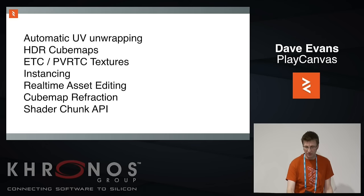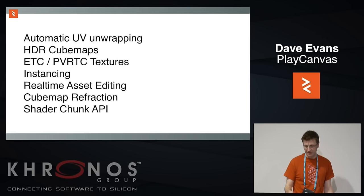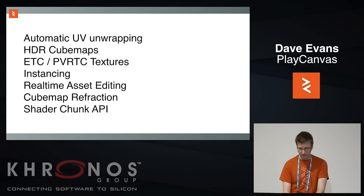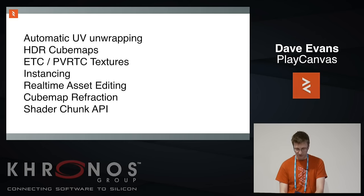Here's another demo of the light map generation. This scene has no dynamic lighting and runs really smoothly on my integrated graphics card. We've got fake bounce lighting done in the bake, and it looks lovely.